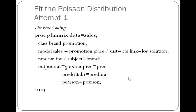In order to fit the generalized linear mixed model, there are two attempts. In attempt number one, I neglect the overdispersion problem. I use the GLIMMIX procedure with the data as sales, classification variables as brand and promotion because these are categorical, and the model statement specifying sales equal to promotion and price as fixed effects and covariate. I ask for the distribution as Poisson and the log link function. In the random statement, I include brand as a random effect. I then ask for the output with predictions and ran the procedure.